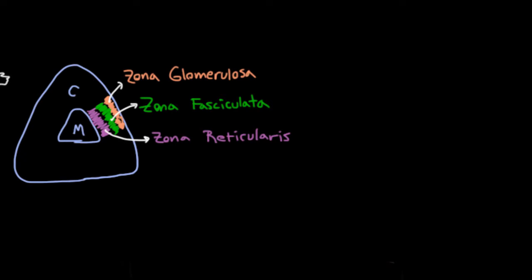And you should be able to think of one hormone that the adrenal gland makes, because we've been talking about it. Can you guess what it is? It's aldosterone. So aldosterone is made in the outer layer, the zona glomerulosa.